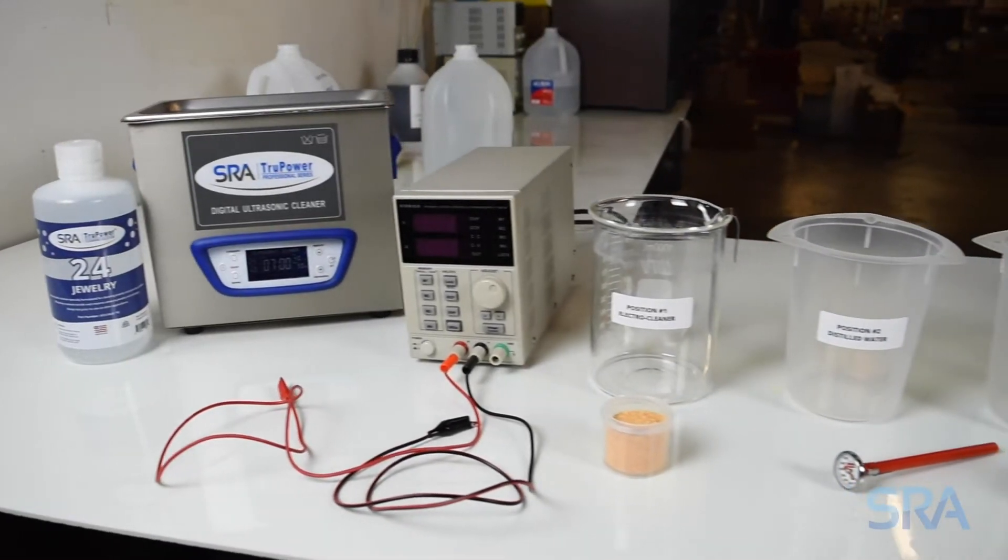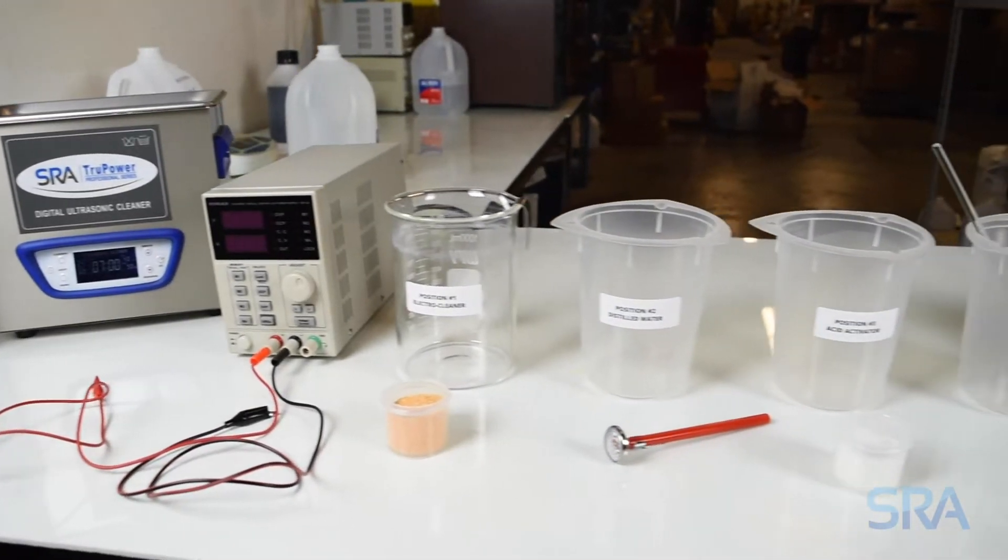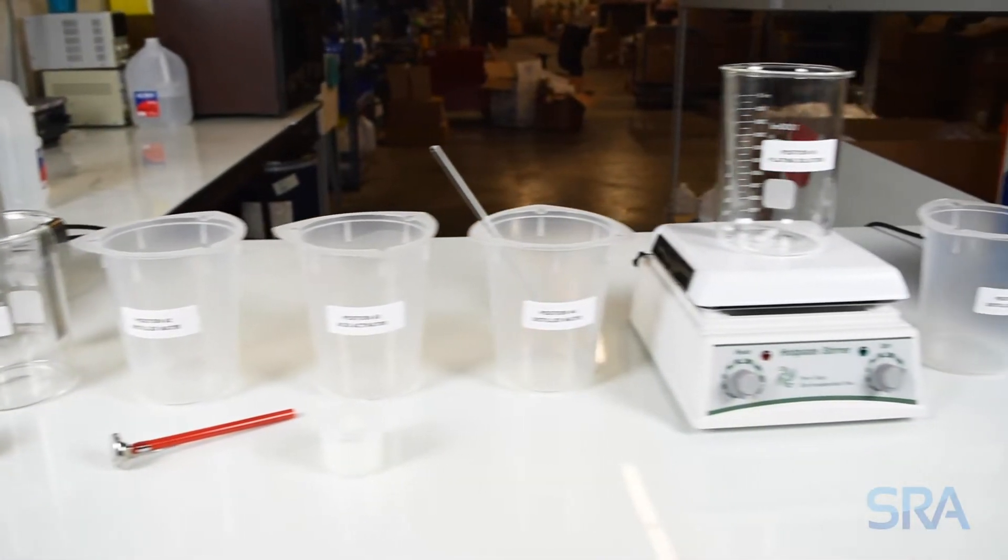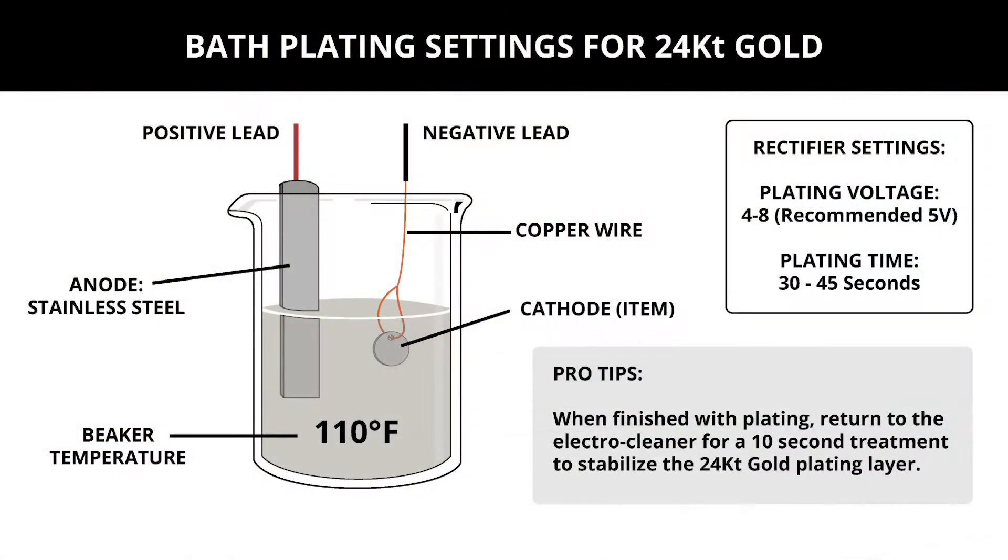In the previous video we went over how to properly set up your work area for plating, but let's now go over the recommended settings for 24 karat gold. Your plating beaker should be heated to 110 degrees Fahrenheit and use a stainless steel anode. For the plating rectifier we recommend 5 volts with a 30 to 45 second plate time.